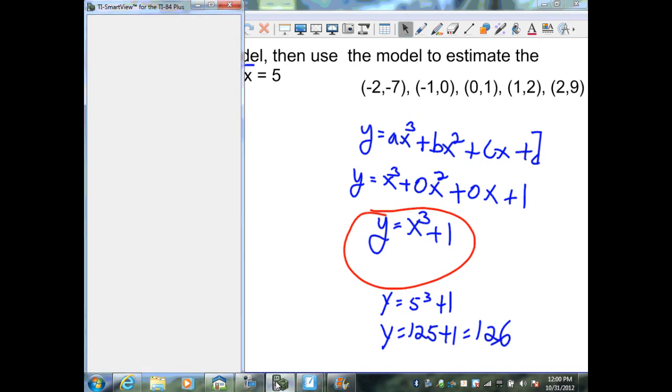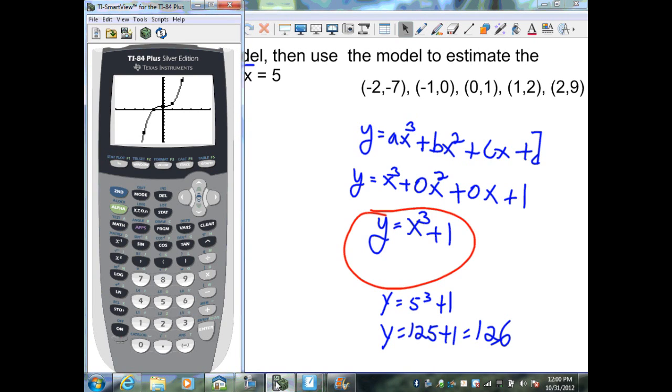I also could have went back to our calculator and I could have hit second graph and that would have given us our table. And you can see that here I have a value of x equal to 5 and our estimation is 126, which is what we got from our substitution.